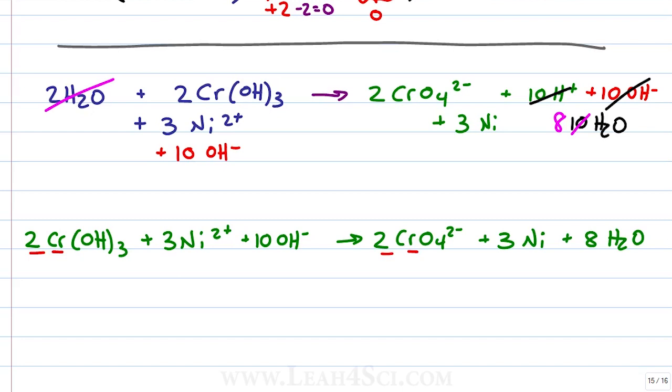We have 2 chromiums, 2 chromiums. Next, we have oxygen, so 3 hydroxides times 2 is 6 oxygen. Another 10 hydroxides gives me 16 oxygen. The products we have 4 oxygen times 2 is 8 plus another 8 in water gives me 16 oxygen.